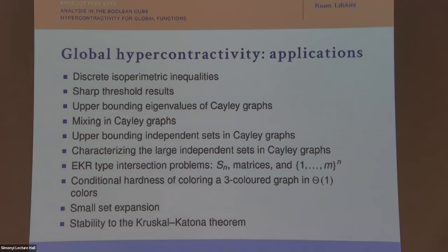Regarding applications to random walk card shuffles on Sₙ: people like Diaconis have studied these using the full Young tableau structure and dimensions of representations to get sharp cut-offs. Our methods could potentially be related to those phenomena. The best results for sharp cut-off also diagonalize the operator, and it depends on which card shuffle you're doing.